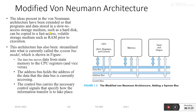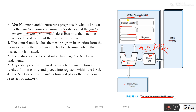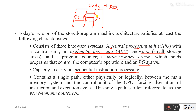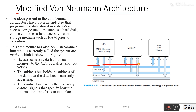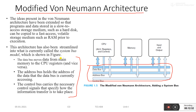To overcome the Von Neumann bottleneck, a modified Von Neumann architecture provides multiple buses: an address bus, a data bus, and a control bus for the CPU, memory, and input/output systems. The data bus transfers data between main memory and CPU registers bidirectionally. The address bus holds the address of the data being accessed, and the control bus carries the necessary control signals specifying how information transfer is to take place.